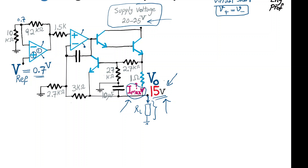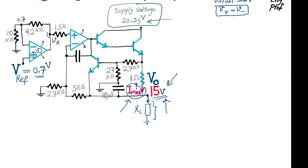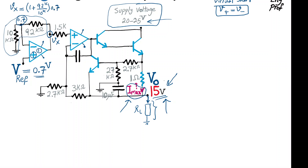Op-amp number 1 is in a non-inverting amplification configuration, which effectively means the voltage at node X, Vx, is determined by a resistive voltage division between the two resistors. Knowing that the negative terminal is at 0.7 volts, we get Vx = (1 + 92k/10k) × 0.7 volts, which is a gain of 10.2 multiplied by 0.7, giving a voltage of approximately 17.14 volts at Vx.